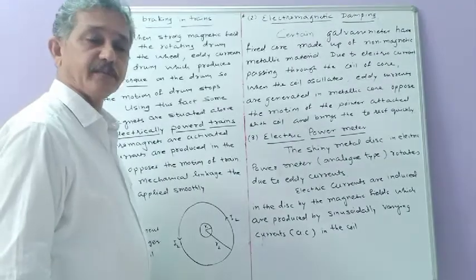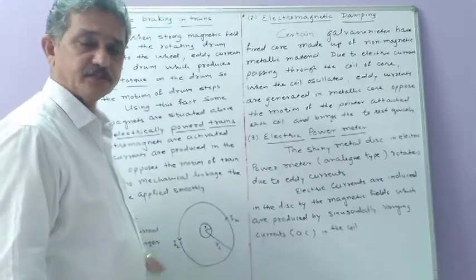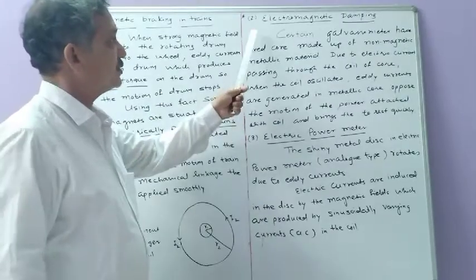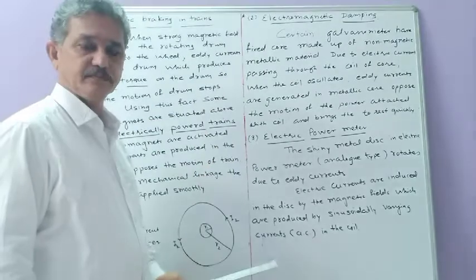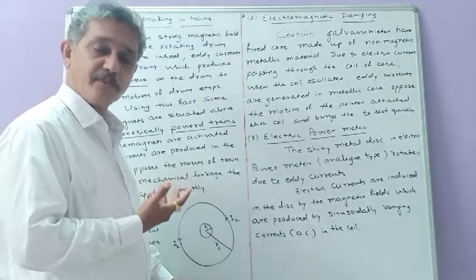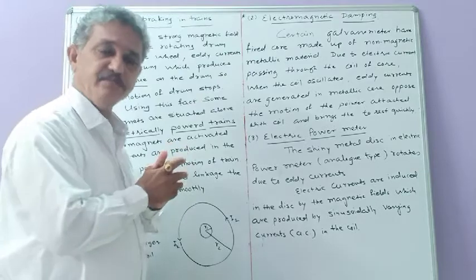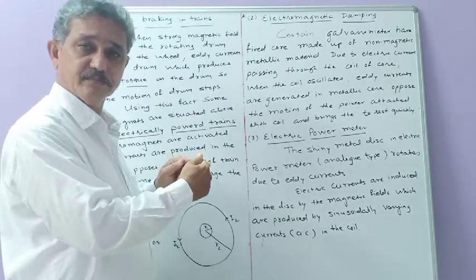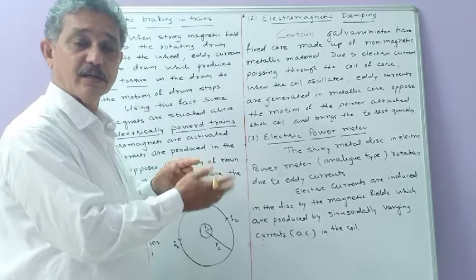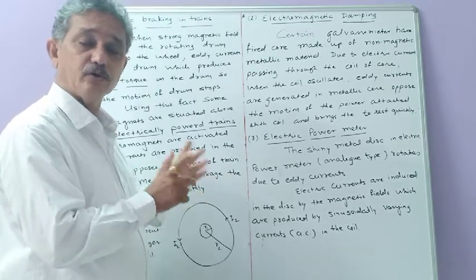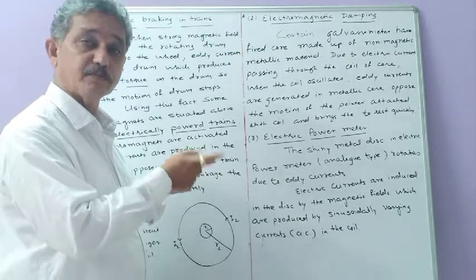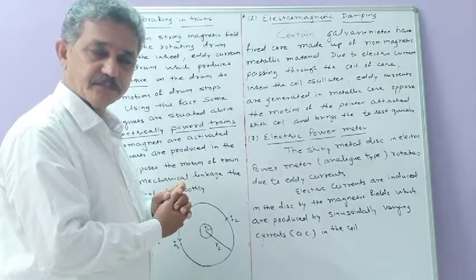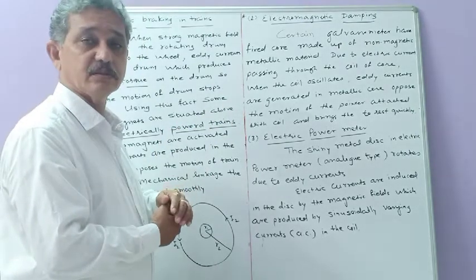Now students, let us discuss the second application of eddy currents. The first application was the induction furnace. The second application is electromagnetic damping. As we know, in the case of galvanometers, an electric current is passing and inside the galvanometer there is a current-carrying coil. Due to the current-carrying coil, a torque acts, and due to this torque the coil deflects. As the coil deflects, the pointer of the galvanometer also deflects on the calibrated scale.